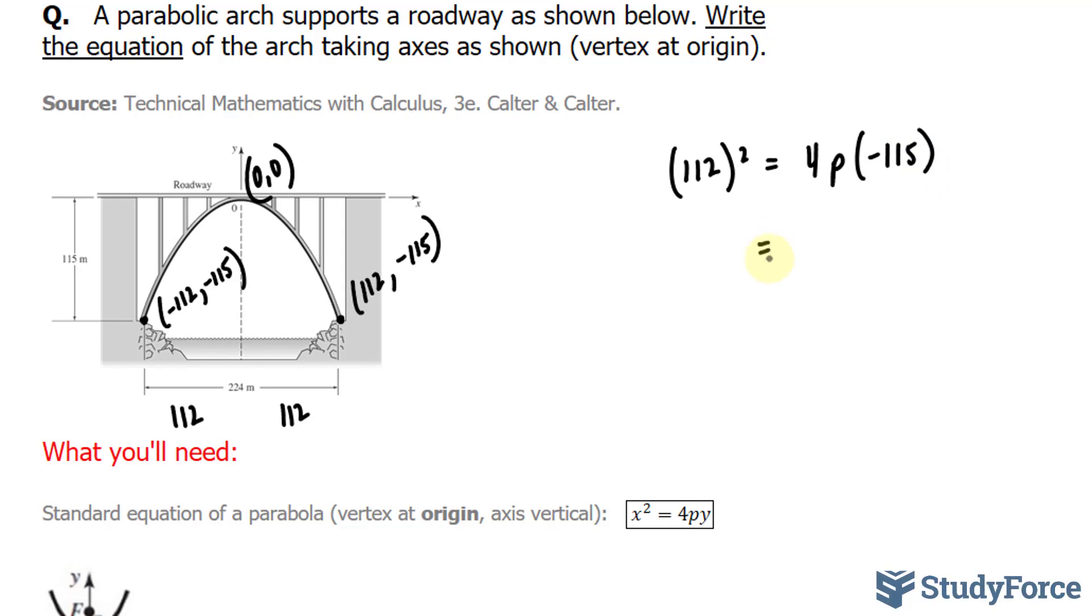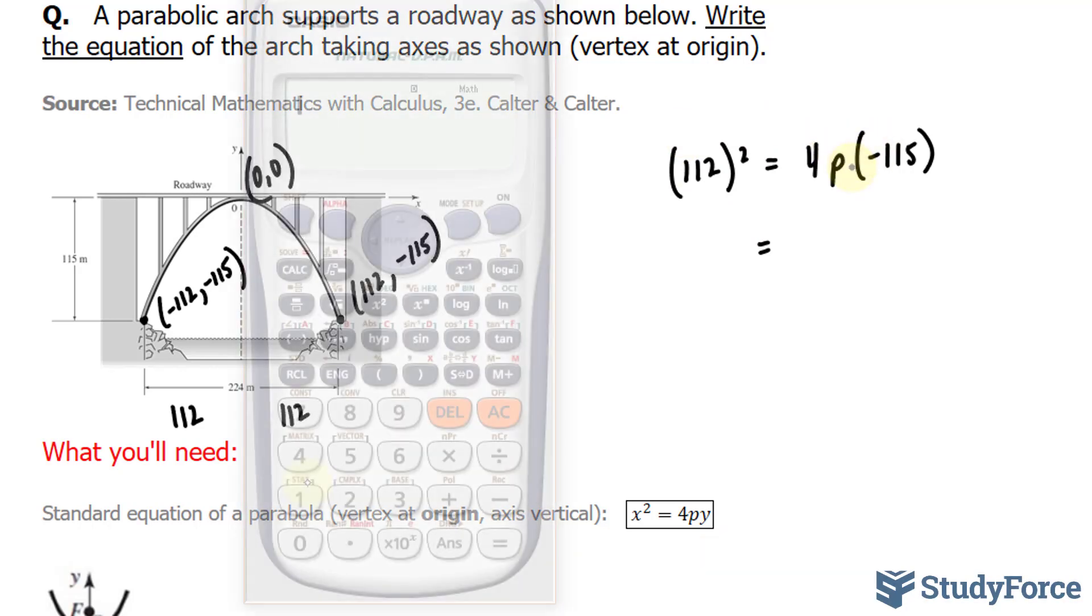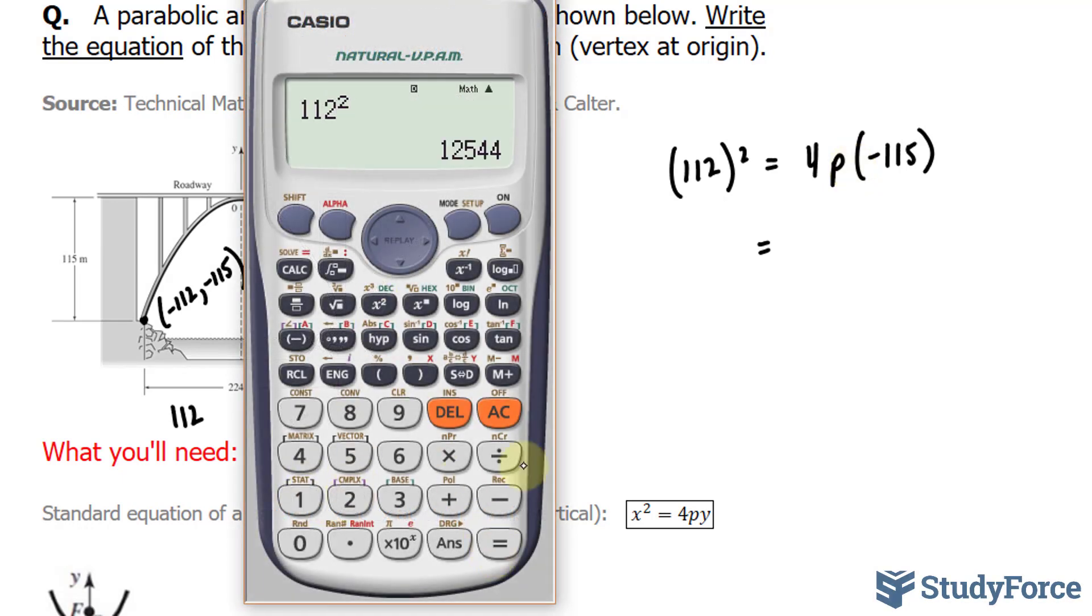We're going to solve for p, and it's really easy to do. I'm going to take the square of the left side and multiply the 4 and the negative 115 together. 112 to the power of 2 gives us 12,544.